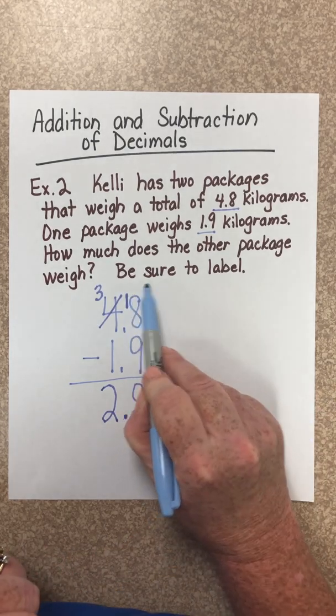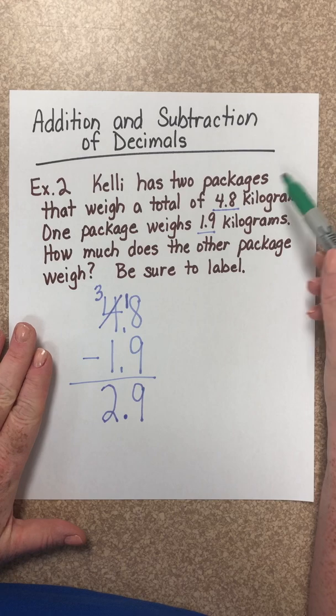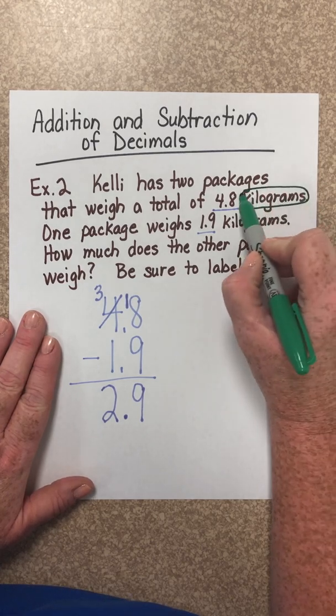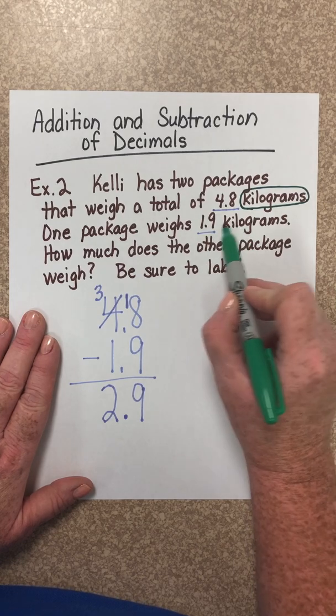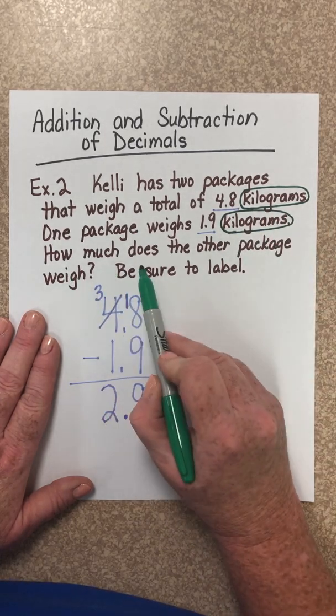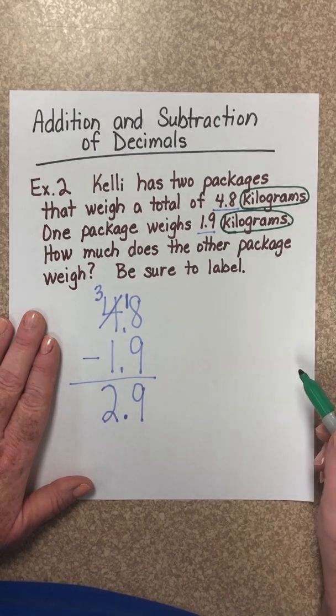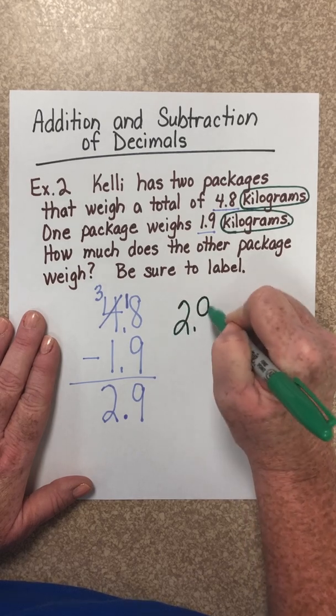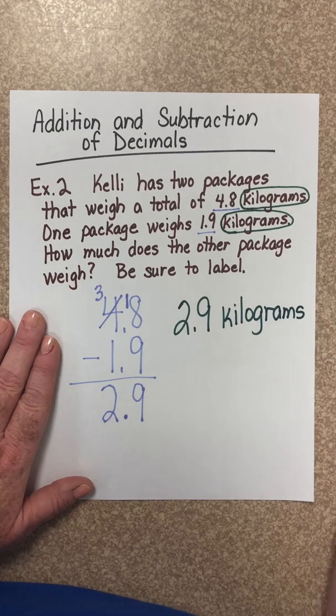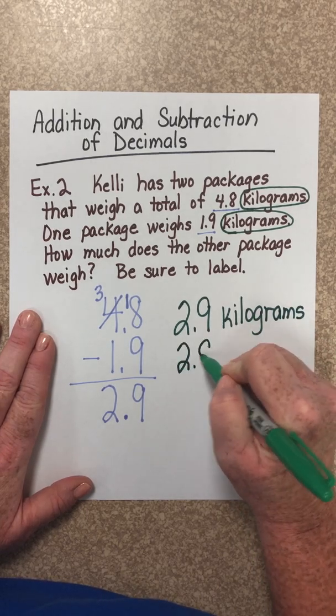So now it says that we're supposed to label. Be sure to label. So now let's go back and look at what that label could be. Well, notice we have 4.8 kilograms. So 4.8 has been labeled already kilograms, and 1.9 kilograms. So the label for 1.9 is also kilograms. Now let's read the question. How much does the other package weigh? Well, the label for weight in this example is kilograms. So our answer is 2.9 kilograms. Because kilograms is a measurement, we can abbreviate it. So that means the answer would be written 2.9 kg.